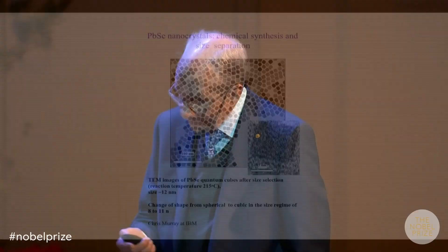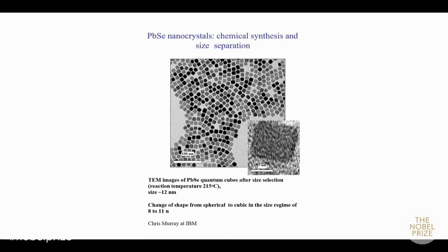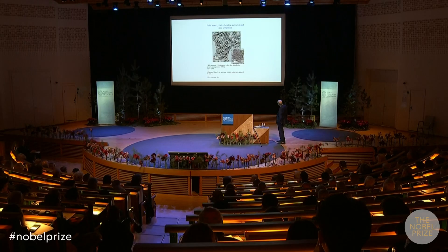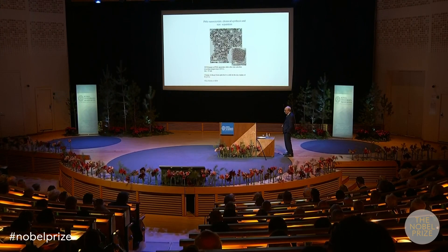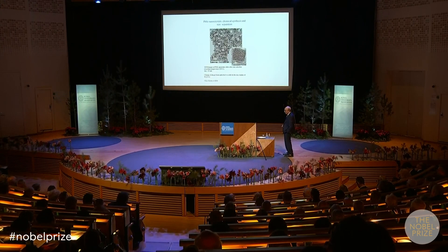Here's some data from the laboratory of Chris Murray, who at that time was at IBM and is in the audience today. This shows lead selenide nanocrystals made as perfect little cubes — each one a single nanocrystal. In the higher resolution image you can see the lattice planes of the individual atoms. This is evidence that you can make really good material if you optimize the synthesis — synthesis is the critical part of all of this.